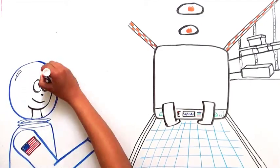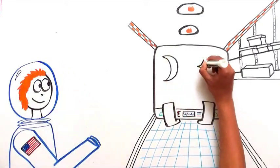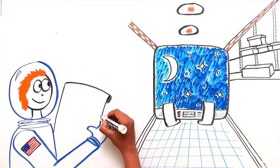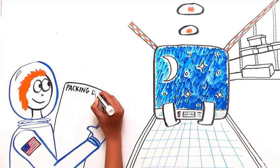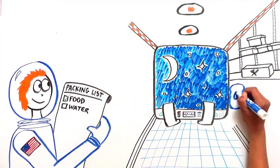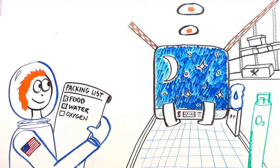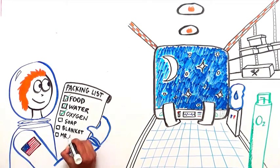Imagine you're an astronaut getting ready to go on a long mission in outer space. What would you pack with you on your spaceship to keep you alive and well? Food to eat, clean water to drink, and enough oxygen to breathe, of course. A few more essentials and you're ready to go.